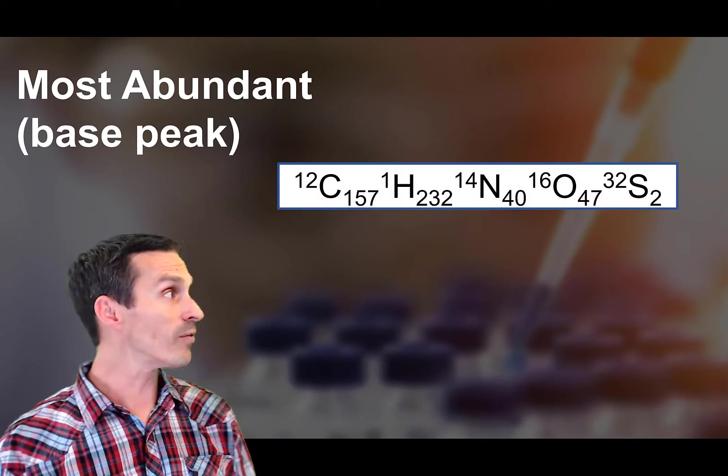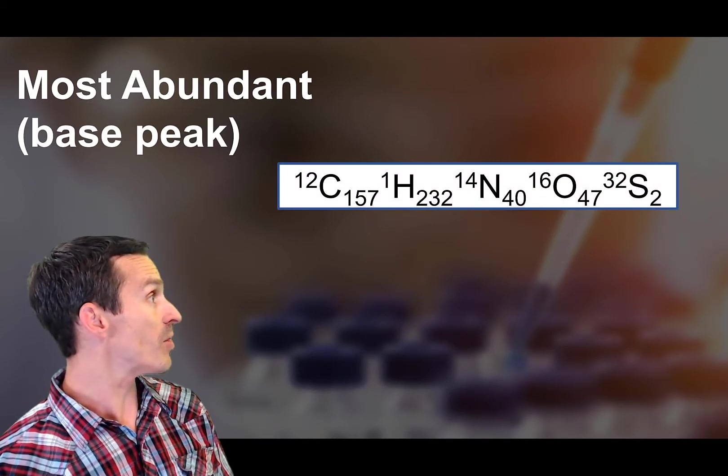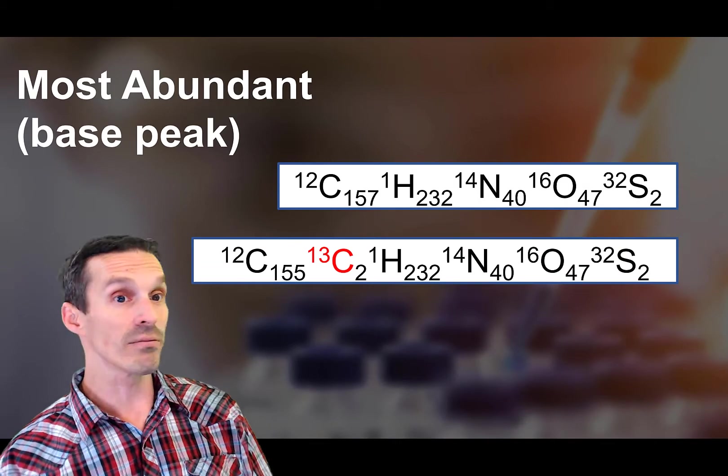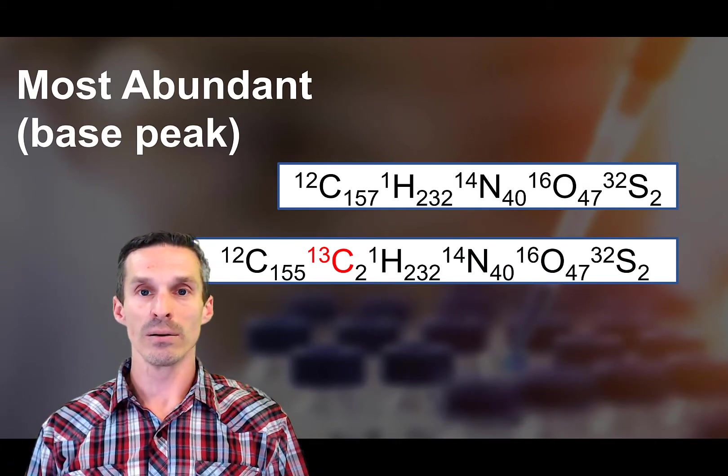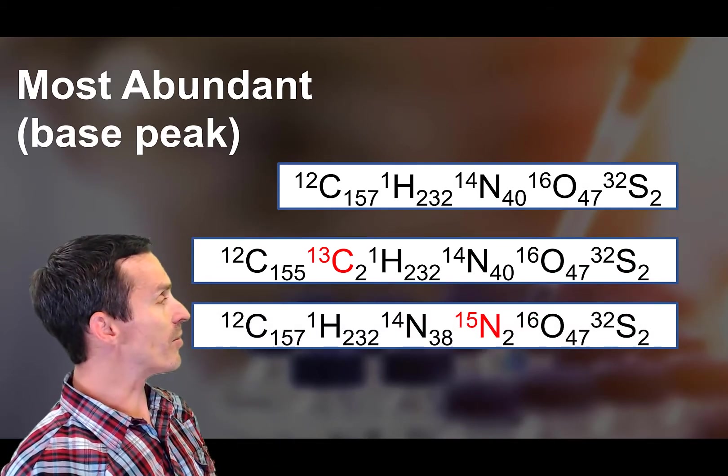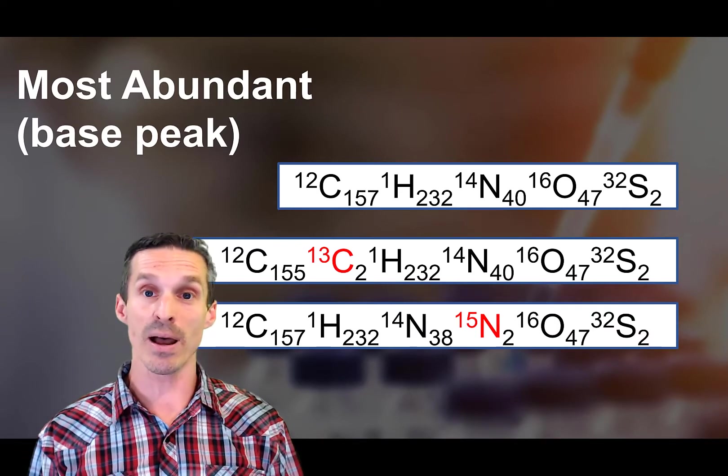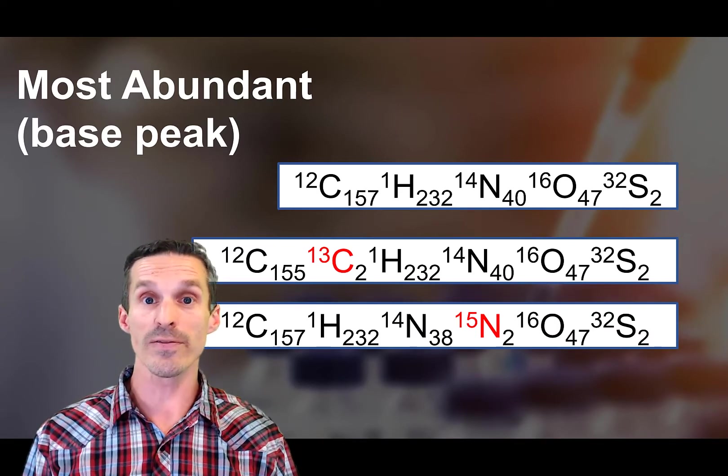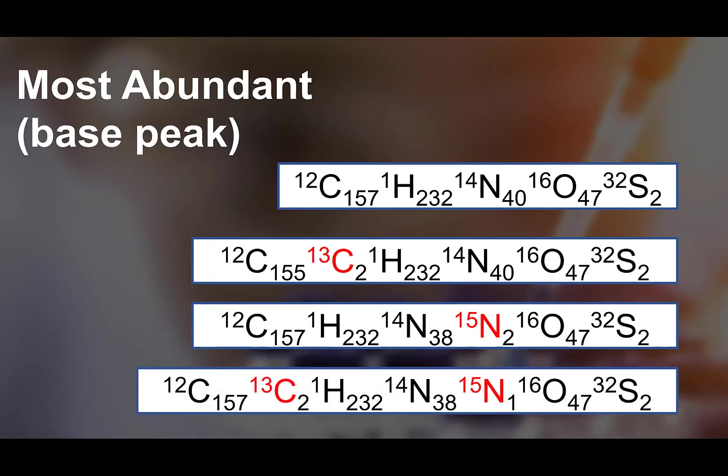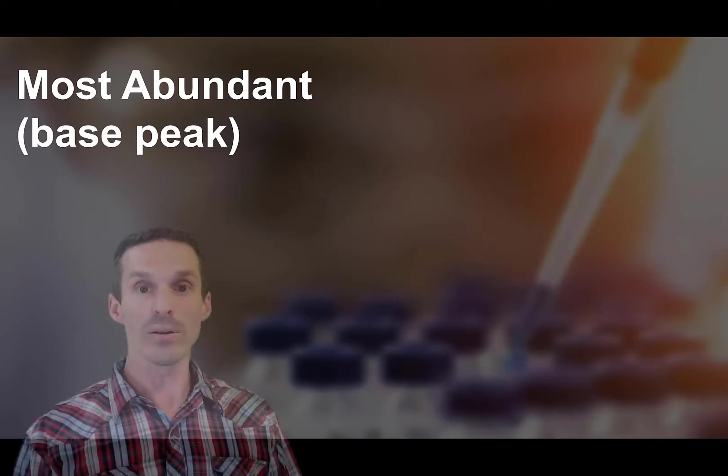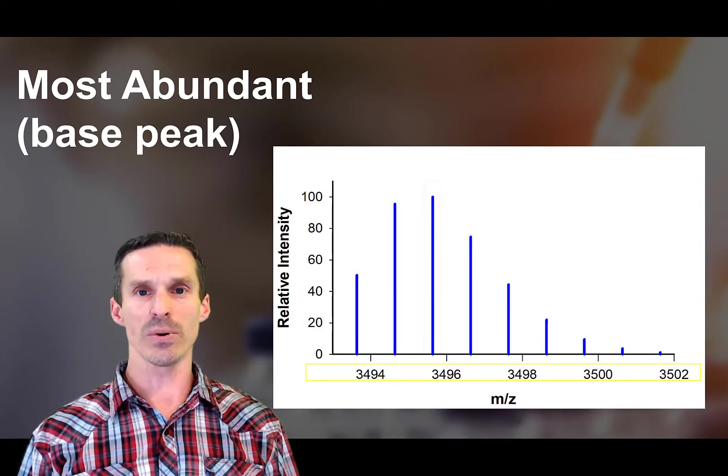Well of course you could take for example carbon-13 and you could take two of them, right? But it doesn't have to be carbon-13. You could easily get to that mass by adding two nitrogen-15, or you could take one of each, one carbon-13, one nitrogen-15. And in fact you could use oxygen, sulfur, hydrogen. There's all kinds of different combinations.